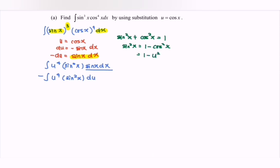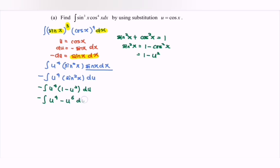Notice that we can write this as 1 minus u squared. So substituting, we have negative integrate u to the power of 4 multiplied by the bracket 1 minus u to the power of 2, with respect to u. Expanding, we get u to the power of 4 minus u to the power of 6, with respect to u.